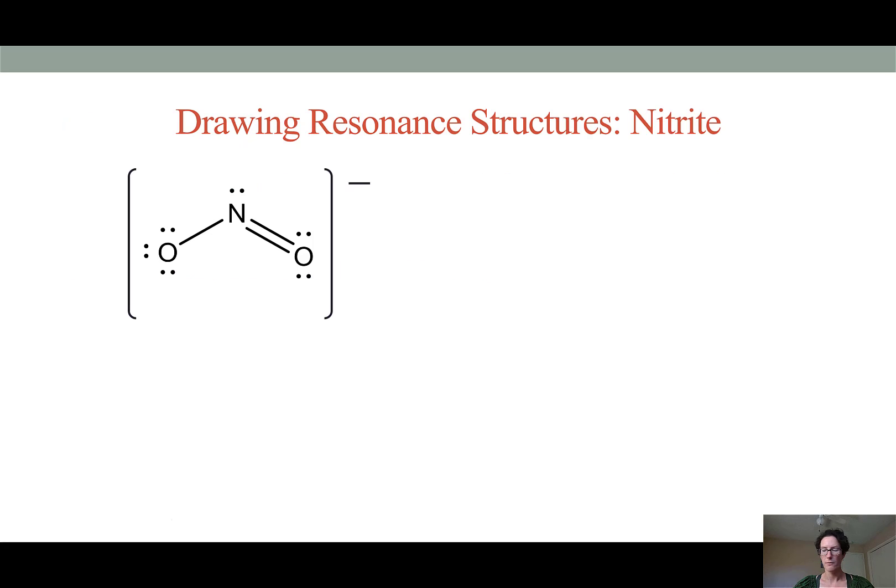To begin with, let's revisit the Lewis structure of the polyatomic ion nitrite, which we drew in the last video. Nitrite is composed of a single nitrogen atom and two oxygen atoms and has a net charge of negative one. When we distributed the electrons according to the octet rule, we saw that nitrogen has one single bond to oxygen and a double bond to the other oxygen.